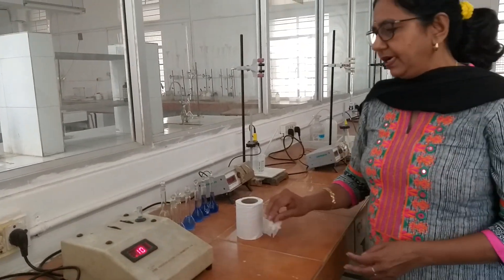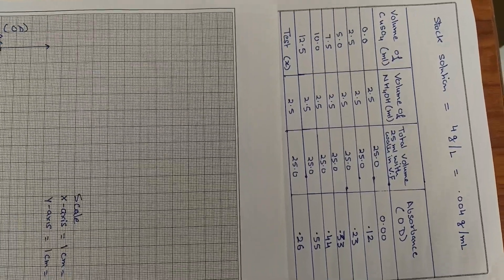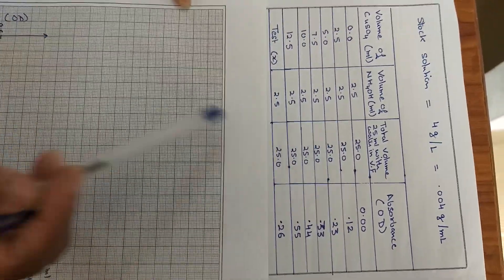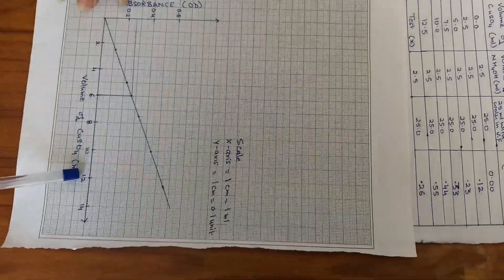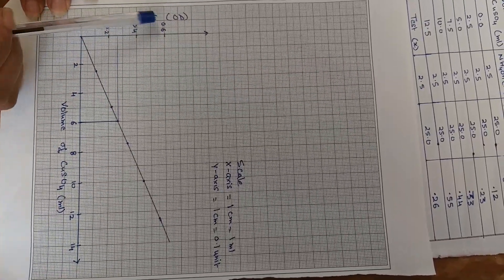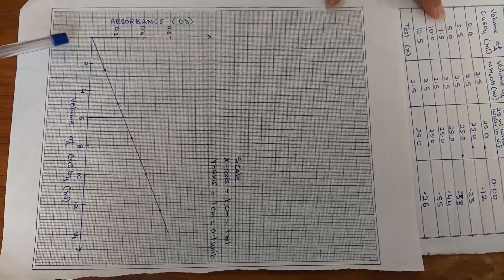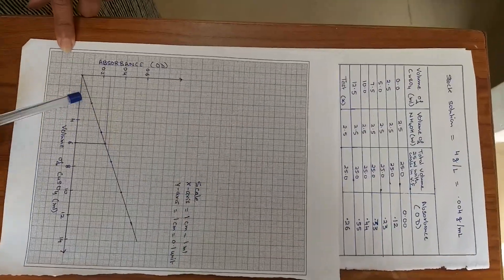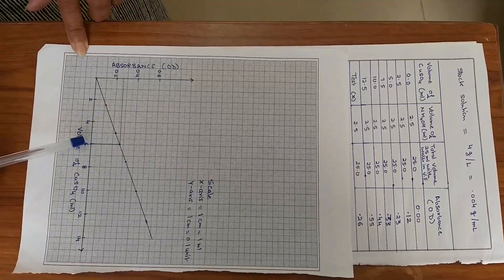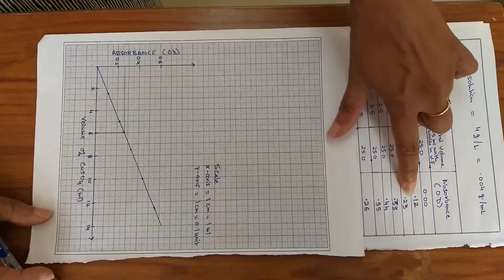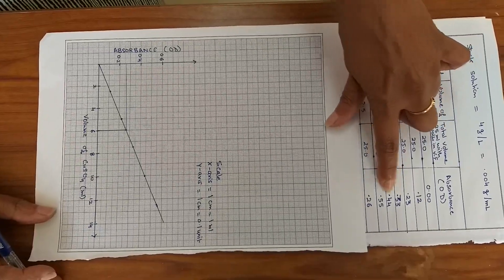This is how the instrument shows the reading, and we will complete this experiment. Finally, we will also take the reading for the test solution. Now let us see how to plot the graph. We have already recorded the absorbance using the various solutions, and we will plot the calibration curve taking volume of copper sulfate on the x-axis and absorbance (OD) on the y-axis. The data points for 2.5, 5, 7.5, 10, and 12.5 ml are recorded as 0.12, 0.23, 0.33, 0.44, and 0.55, respectively.